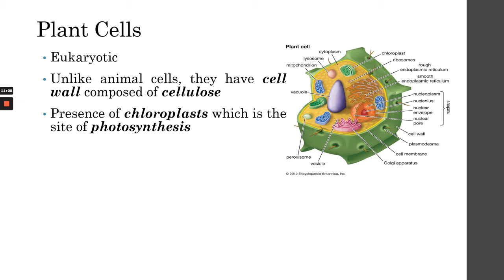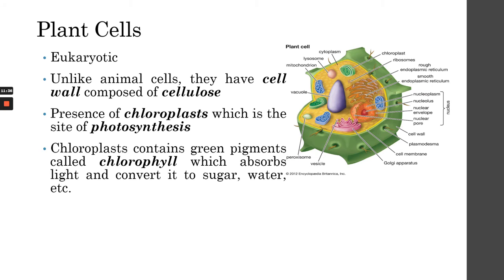Plant cells also have a chloroplast, which is a very important organelle because this is where photosynthesis happens. Photosynthesis is important for plant cells to produce the necessary chemicals they need to survive and to produce flowers and fruits. Chloroplasts contain grain pigments called chlorophyll, which absorbs light and converts it into sugar, water, and other materials the plant needs.